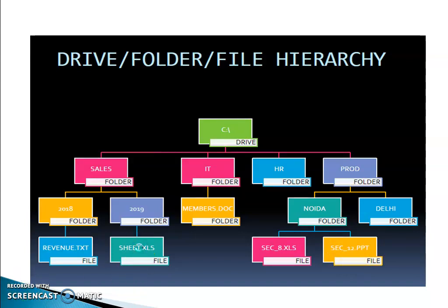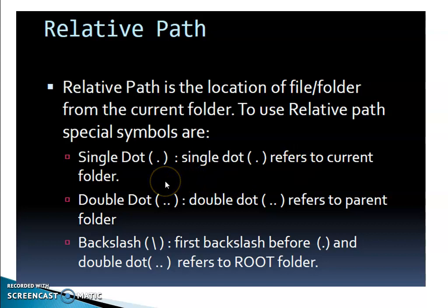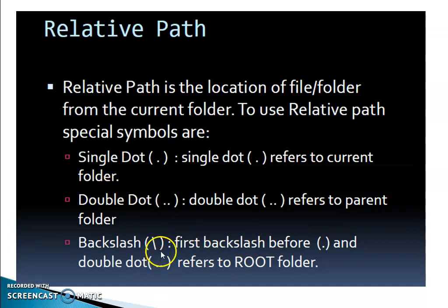Relative path is the location of a file or folder from the current folder. To use a relative path, you can use the symbols single dot or double dot. Single dot refers to the current folder where you are working now. Double dot refers to the parent folder. A backslash before the dot or double dot refers to the root folder.